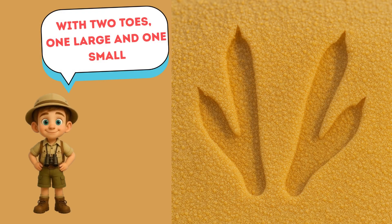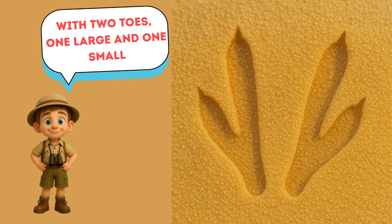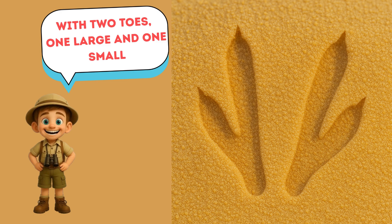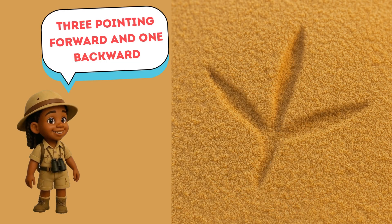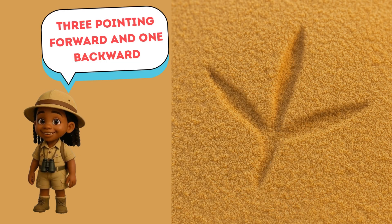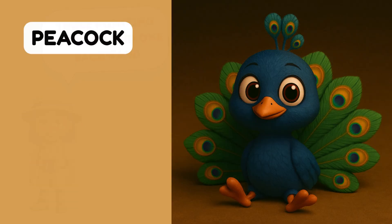Whose footprints are those? With two toes, one large and one small — that's an ostrich track. Whose footprints are those? Three pointing forward and one backward — that's a peacock track.